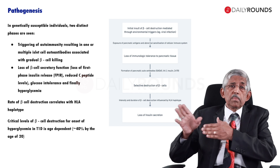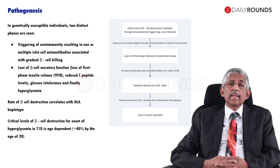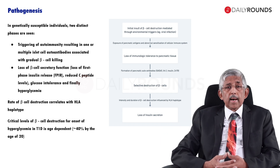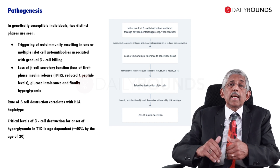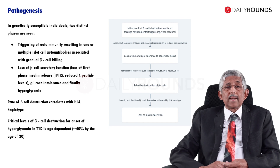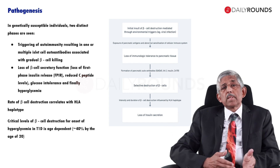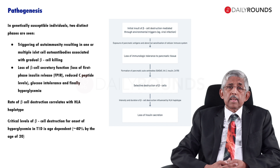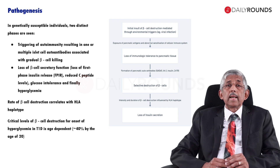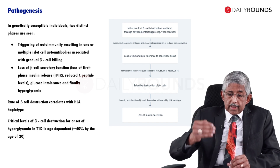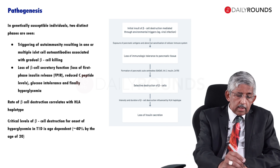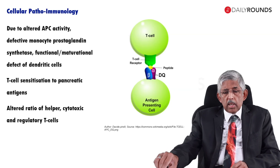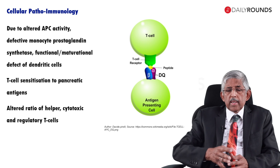The body's own immune cells attack the pancreatic beta cells. Once it goes and damages them, the beta cells start dying, and at a certain stage when all the beta cells are dead, you develop type 1 diabetes. That is the major mechanism by which it occurs.